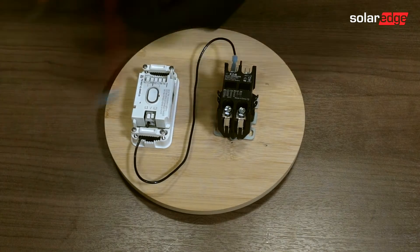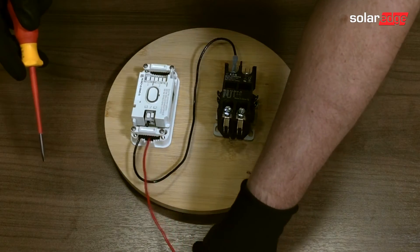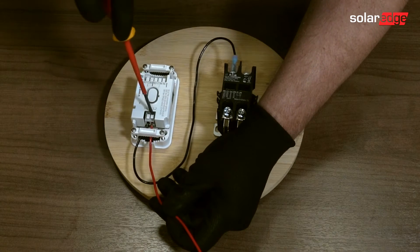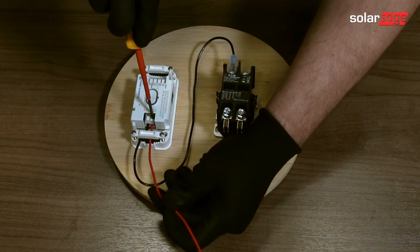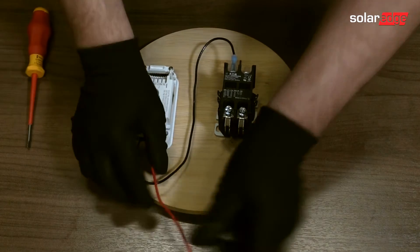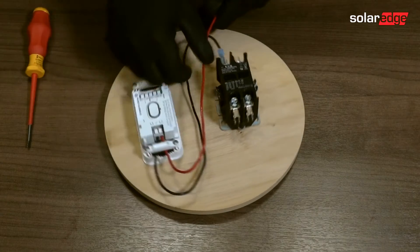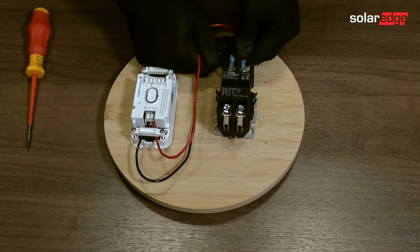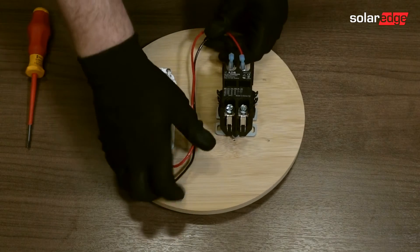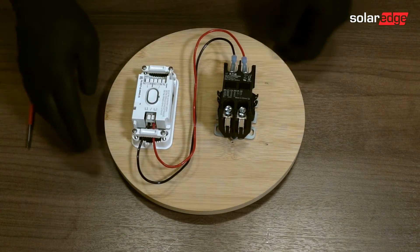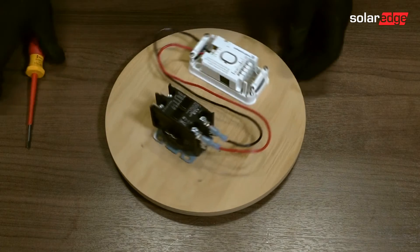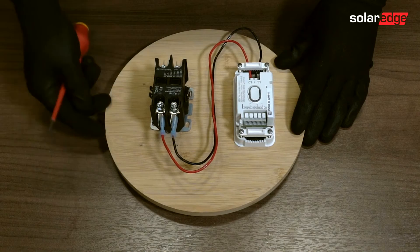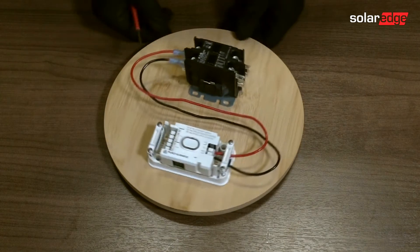Alright, now we're going to do line two. Same thing, flat blade screwdriver, tug test, route my wire. Using my spade terminal connector, I'm going to connect it to the supply side of the contactor. Alright, so let me give you a little spin so you can see what we did. We can see line two right here and we can see line one right here connected on the supply side of the contactor.